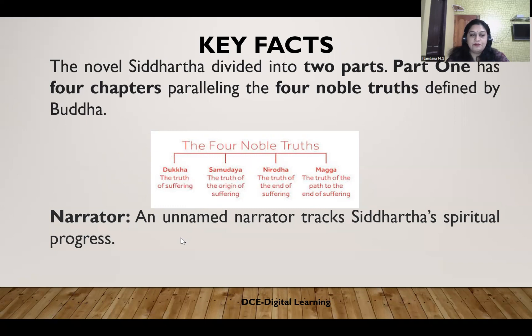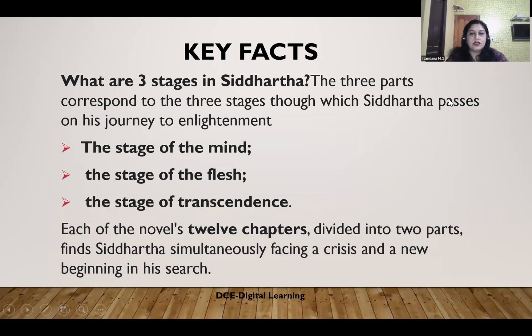The narrator is an unnamed narrator who tracks Siddhartha's spiritual progress. Regarding the three stages in Siddhartha: the three parts correspond to the three stages through which Siddhartha passes on his journey to enlightenment — the stage of the mind, the stage of the flesh, and the stage of transcendence. Each of the novel's twelve chapters finds Siddhartha simultaneously facing a crisis and a new beginning in his search.